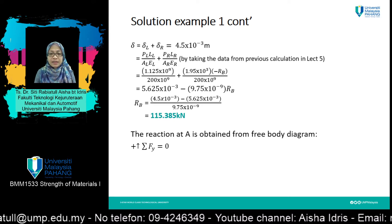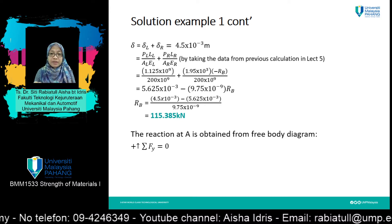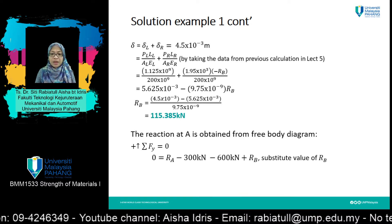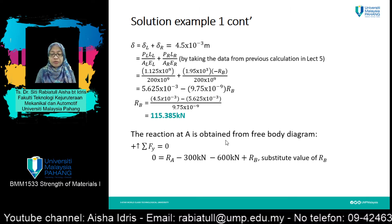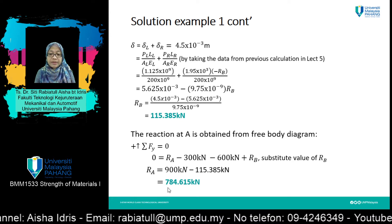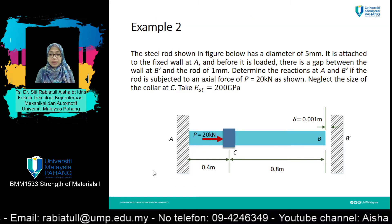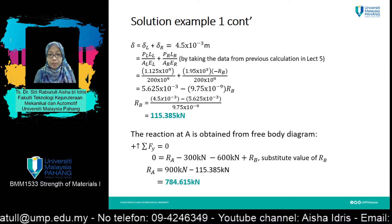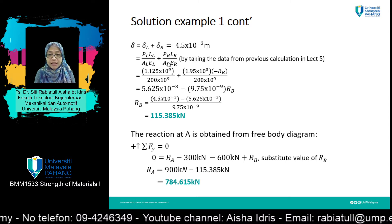After that, draw a free body diagram and take the total forces in the Y direction equals to zero. Substitute the value of R_B, and you will get the value of the reaction at point A equal to 784.615 kN. Remember, you need to review Lecture 5 in order to understand this part.